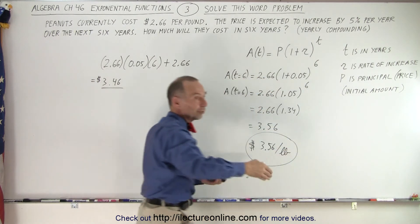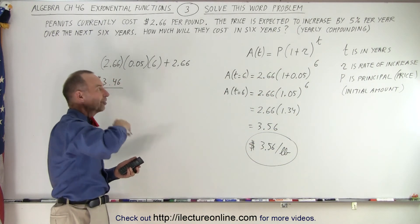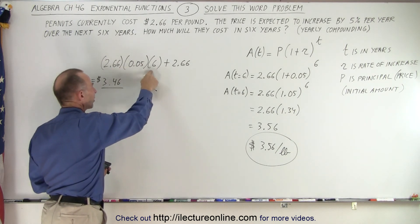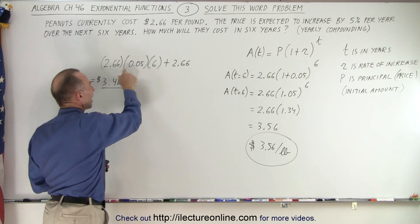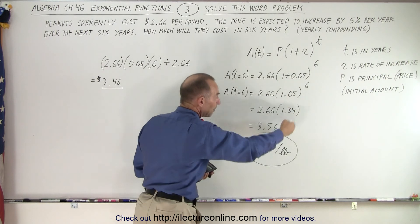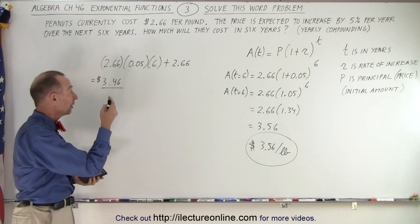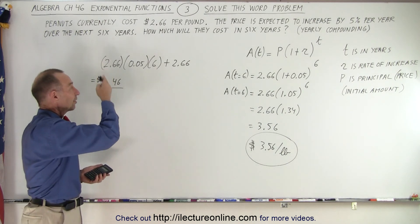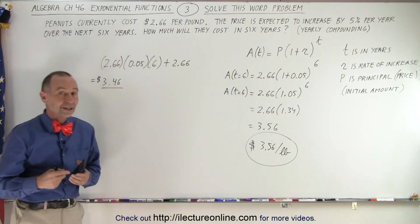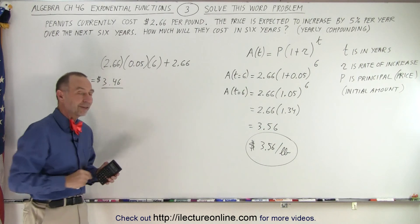This is what we call yearly compounding — the 5% increase is applied to the new price every single year. The other approach simply multiplies the original price by 5% times 6, meaning it's 30% higher than the original, not compounded. The compounded result uses the exponential function, and that's the difference between a flat rate increase and compounding yearly, where you have the increase on top of the increase on top of the increase.